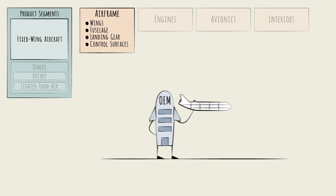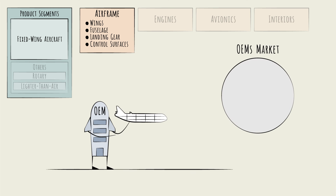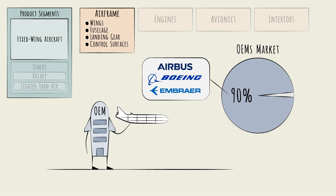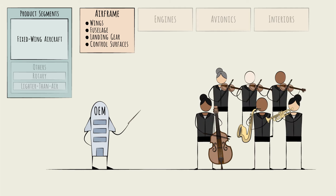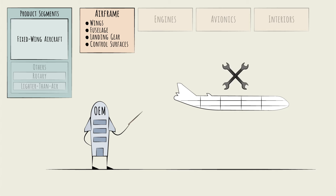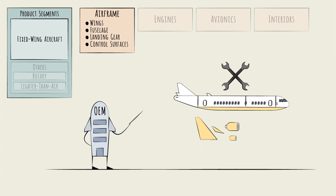There are three principal manufacturers of large commercial aircraft: Airbus, Boeing, and Embraer. These three alone have 90% market share. Airframers are like the conductors of the whole orchestra — they make key parts of the airframe and then assemble the rest of the aircraft from component systems.